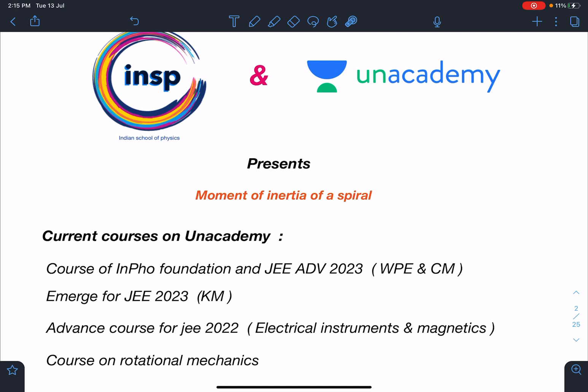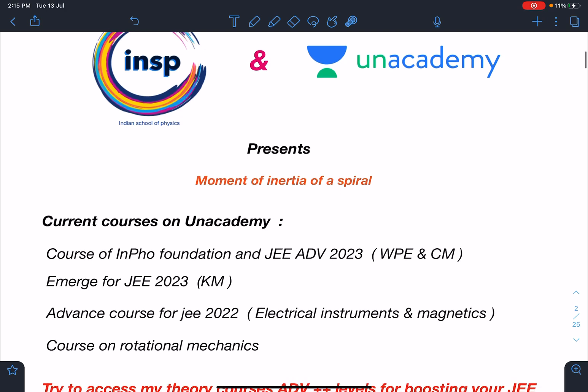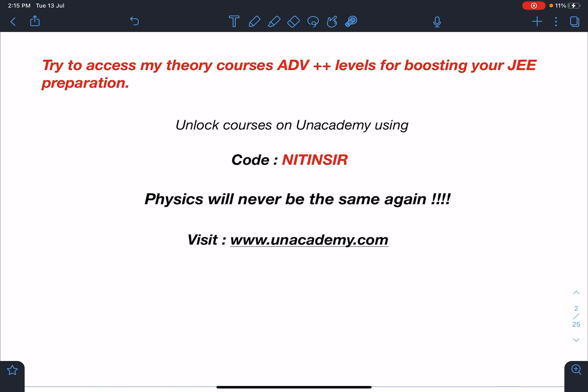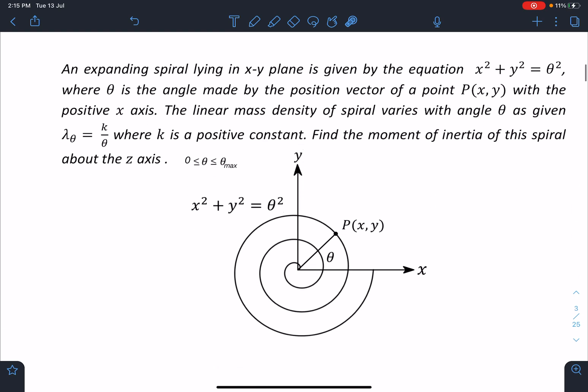All these courses are starting from 14th of July. There is another course on Rotational Mechanics - we are just about to end, we are at Angular Momentum. You can access my theory courses which are of advanced plus plus levels for boosting your JEE preparation. You can unlock these courses on Unacademy using my code NitinSir. For more info you can visit www.unacademy.com. Trust me, physics will never be the same again. So here is the problem statement.